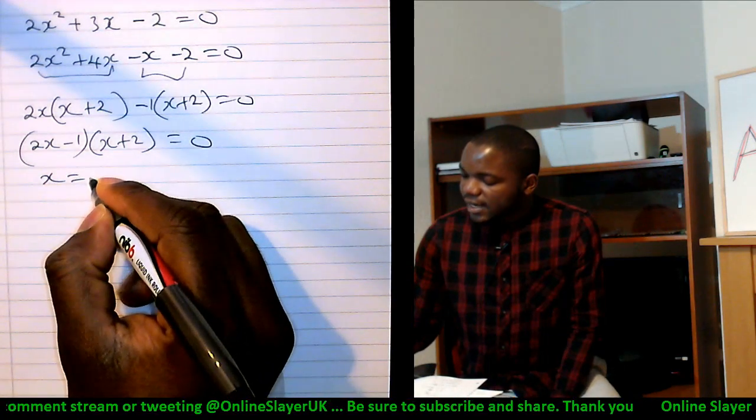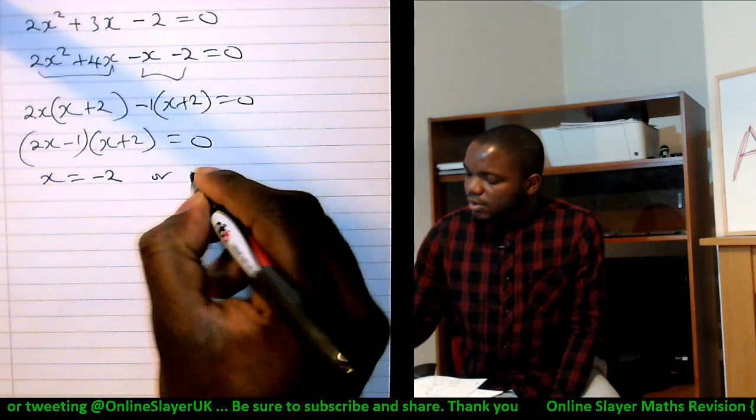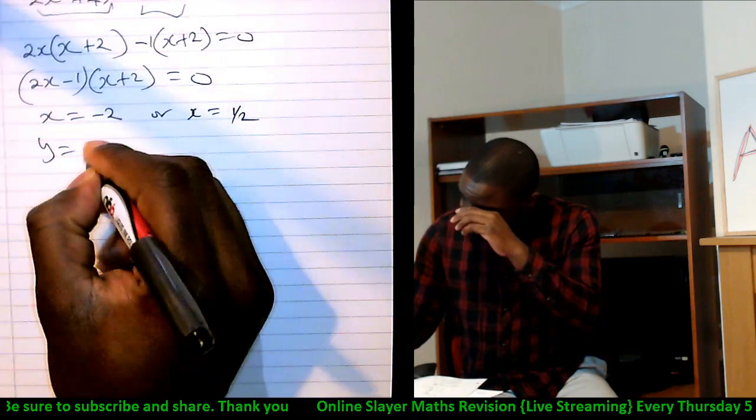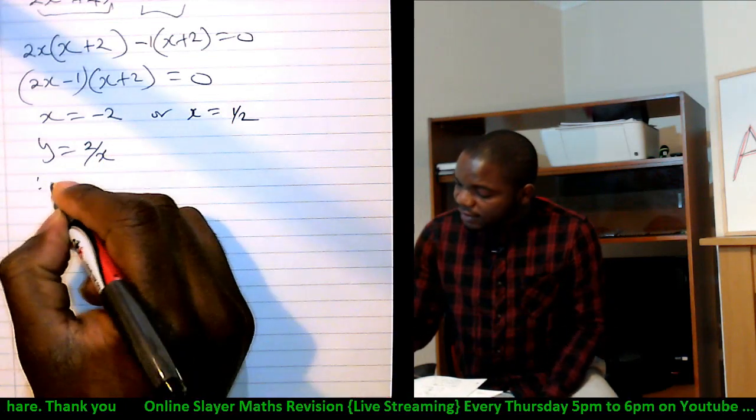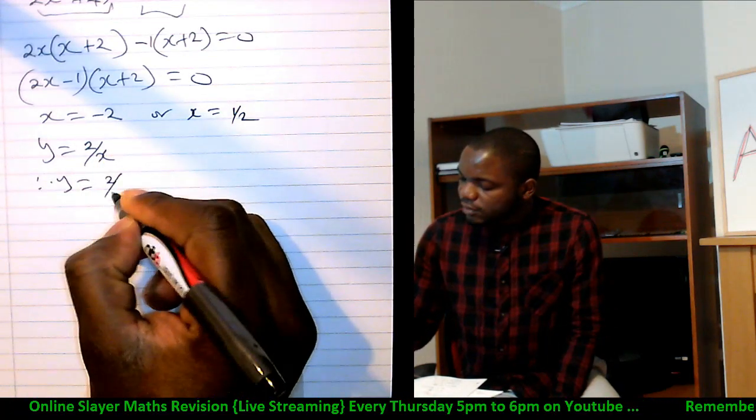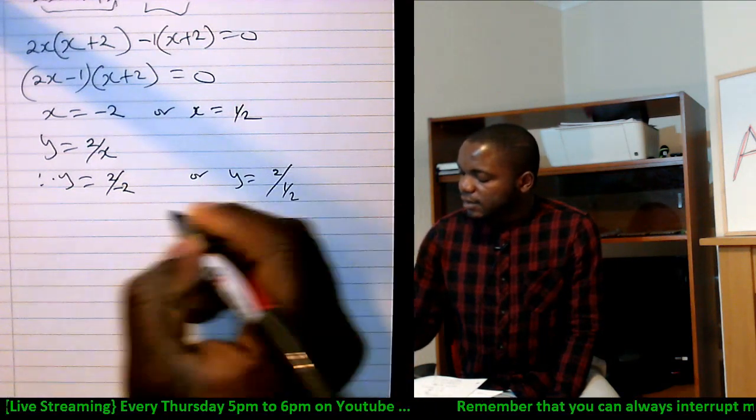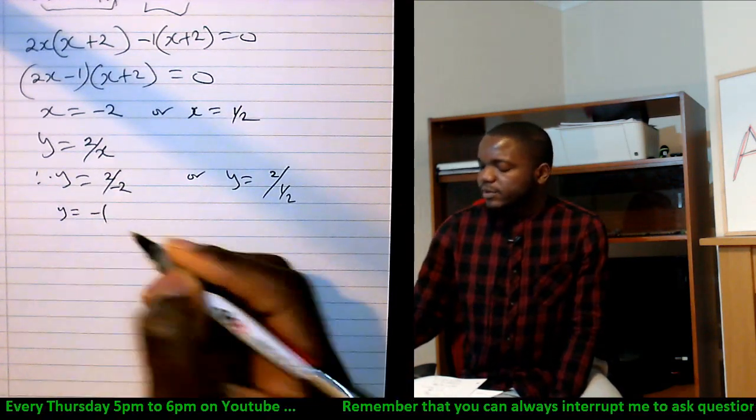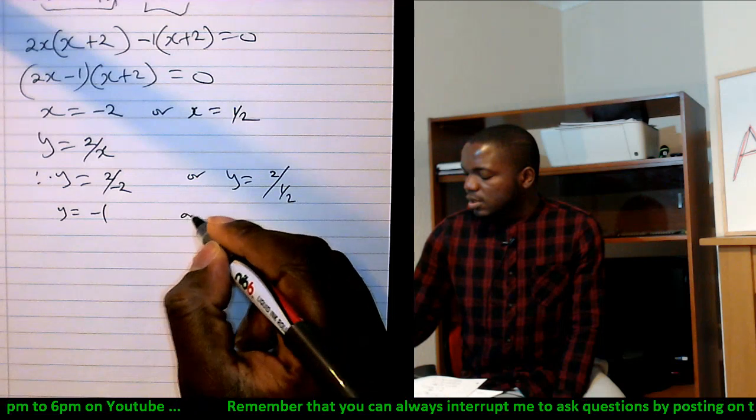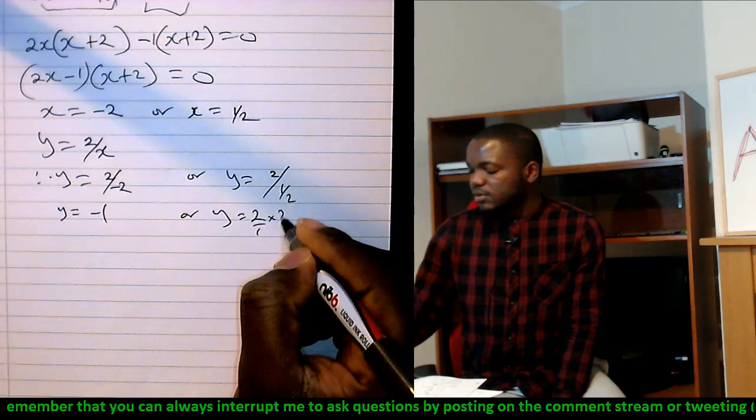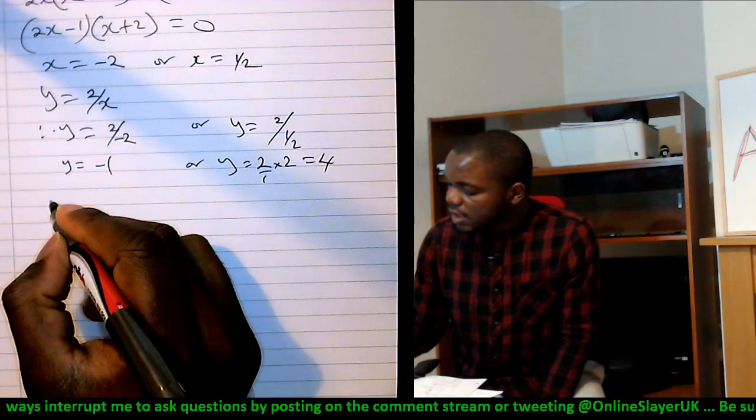x is either minus 2 or x is 1 over 2. And we already said that y is 2 over x. Therefore, y is either 2 over minus 2 or y is 2 over half. 2 over minus 2 is minus 1.